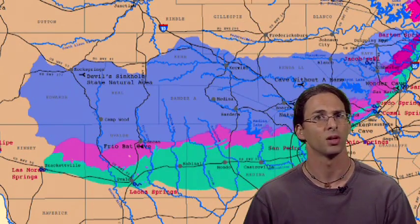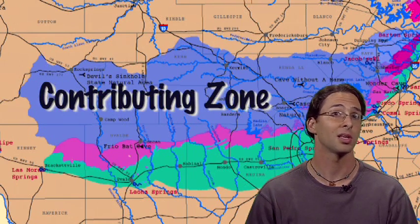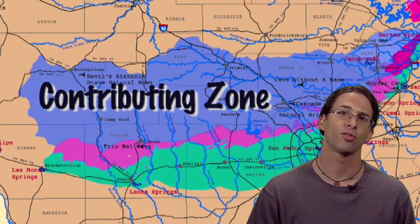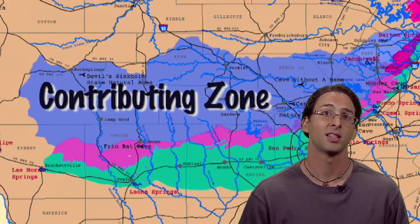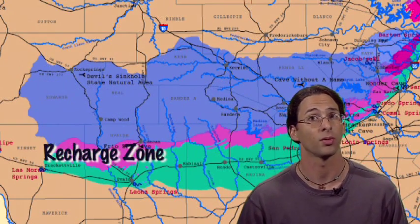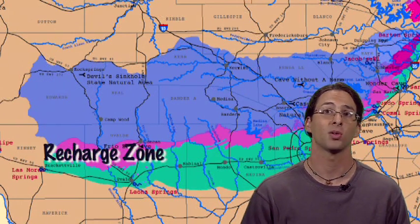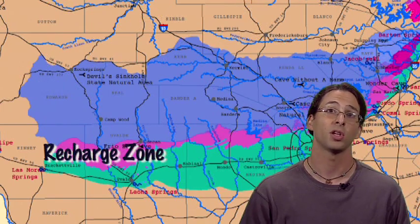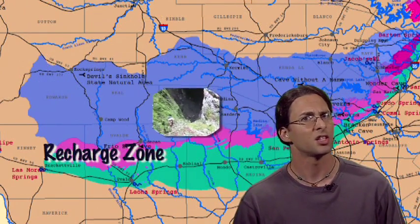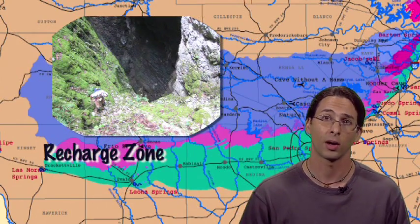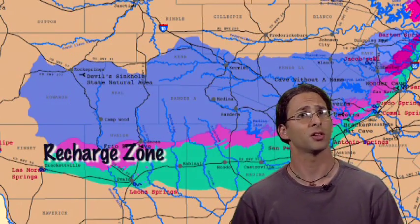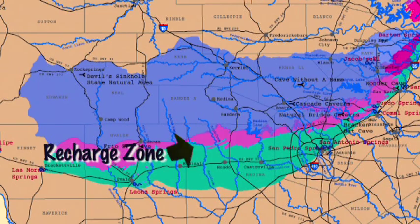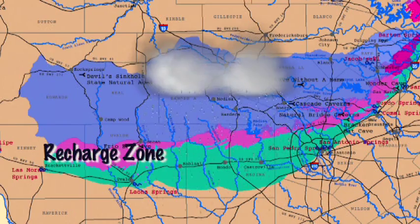Starting with the purple zone, which is the contributing zone — the contributing zone is like the roof of a barn. Water falls on the roof of a barn and runs off onto the ground. In real life, the roof of the barn is the contributing zone; it takes the water and directs it onto the recharge zone. The recharge zone is the pink band — a very special part of the aquifer that allows water to infiltrate directly into the aquifer. It is the only part that feeds water directly into the ground. Water cannot enter the aquifer from any area other than the pink zone. By itself the recharge zone is only a thin strip of land, so the contributing zone supplements it by adding more water.